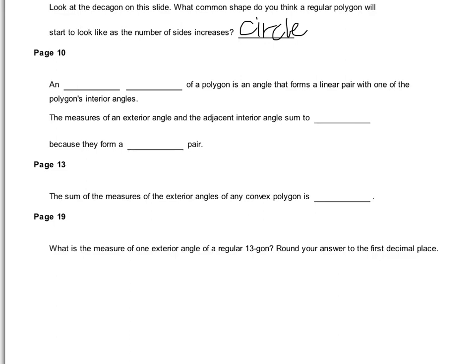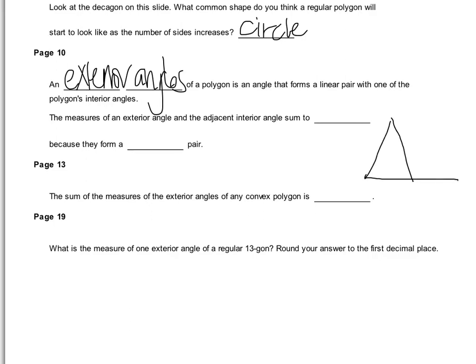We've talked about interior angles. Now we're going to talk about exterior angles. Exterior angles are outside — an exterior angle of a polygon is an angle that forms a linear pair with one of the polygon's interior angles. So in a triangle, this interior angle and this exterior angle form a linear pair, meaning they add up to 180. If one is 70, then the one on the outside is 110.